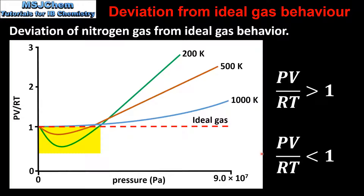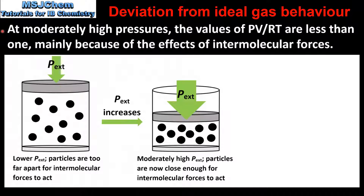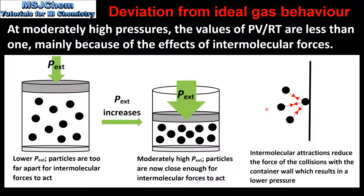On the graph we can see that at moderately high pressures the product of PV over RT is less than 1, and at very high pressures it is greater than 1. At moderately high pressures, values of PV over RT are less than 1, which is mainly because of the effects of intermolecular forces. At lower external pressures the particles are too far apart for intermolecular forces to act. As external pressure increases, the particles are forced closer together. Intermolecular attractions between the gas particles reduce the force of collisions with the container wall, resulting in a lower pressure. Because the pressure of the gas becomes less than expected, the product of PV over RT is less than 1.